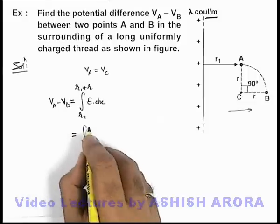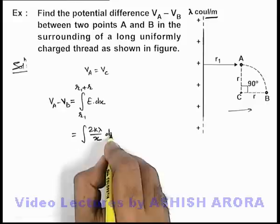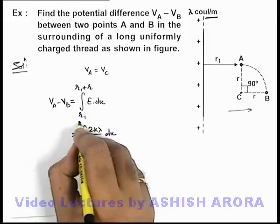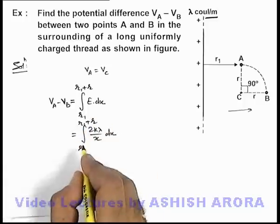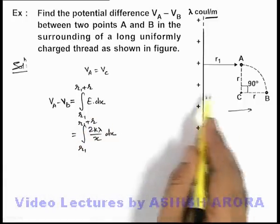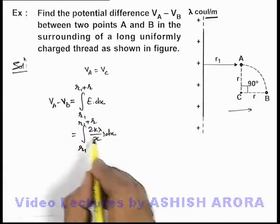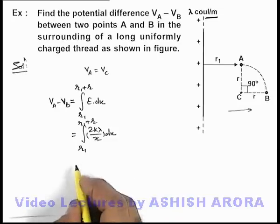So this will be integration of 2kλ by x dx from r_1 to r_1 plus r. At a general point at a distance x from the uniformly charged thread, electric field is given by 2kλ by x.